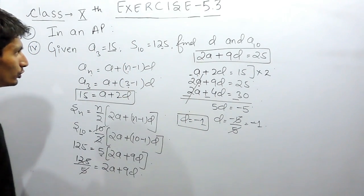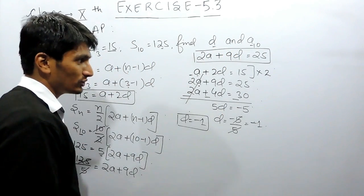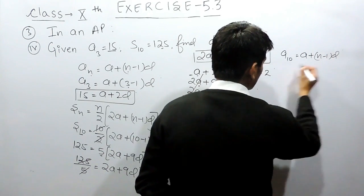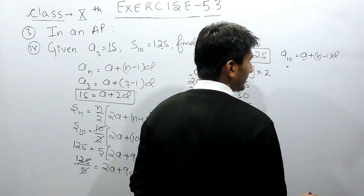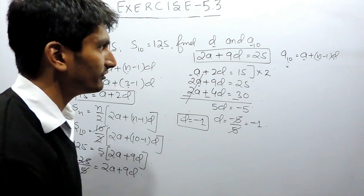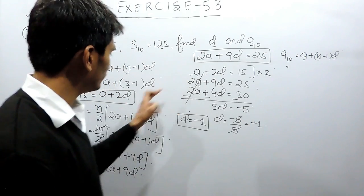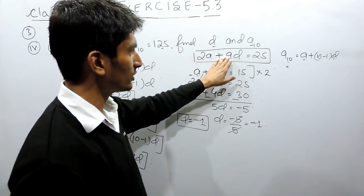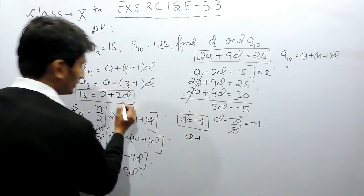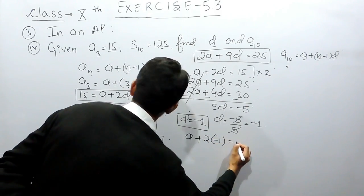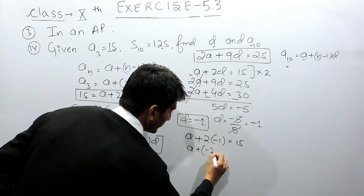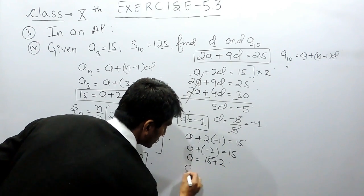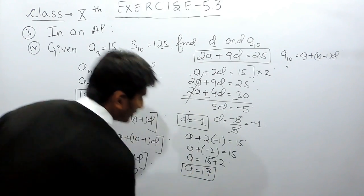Now we need to find the value of a. We substitute d = -1 into the first equation: a + 2(-1) = 15, so a - 2 = 15, which gives us a = 17. The first term of the AP is 17.